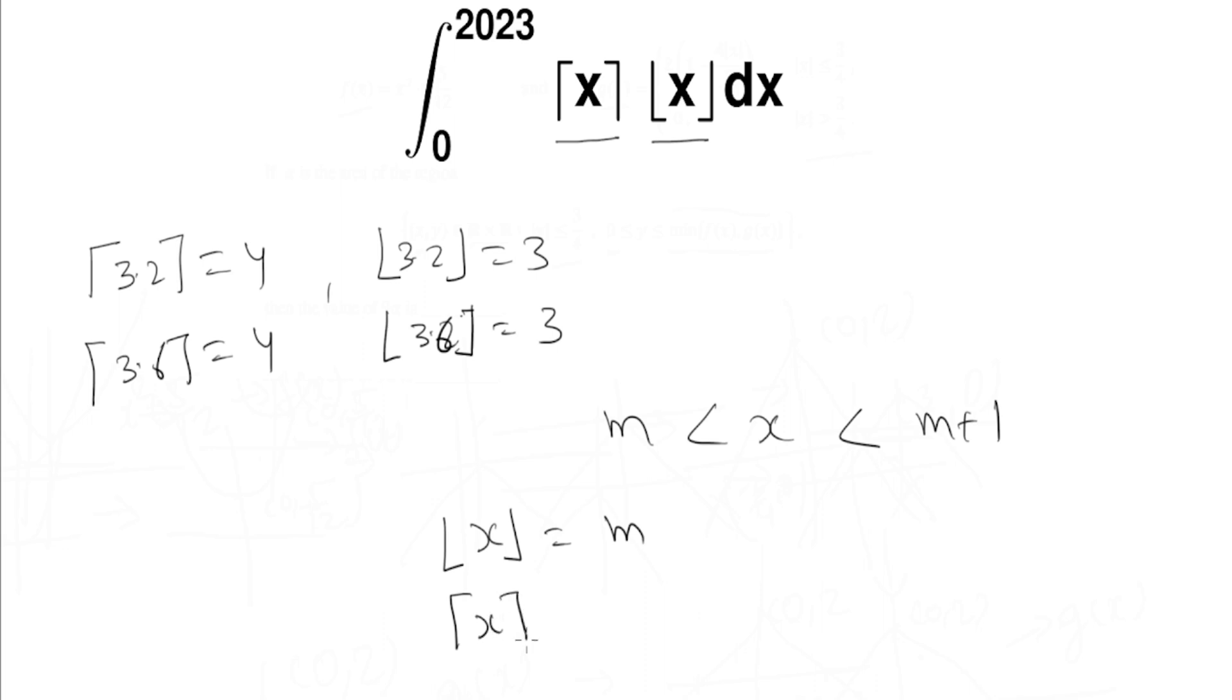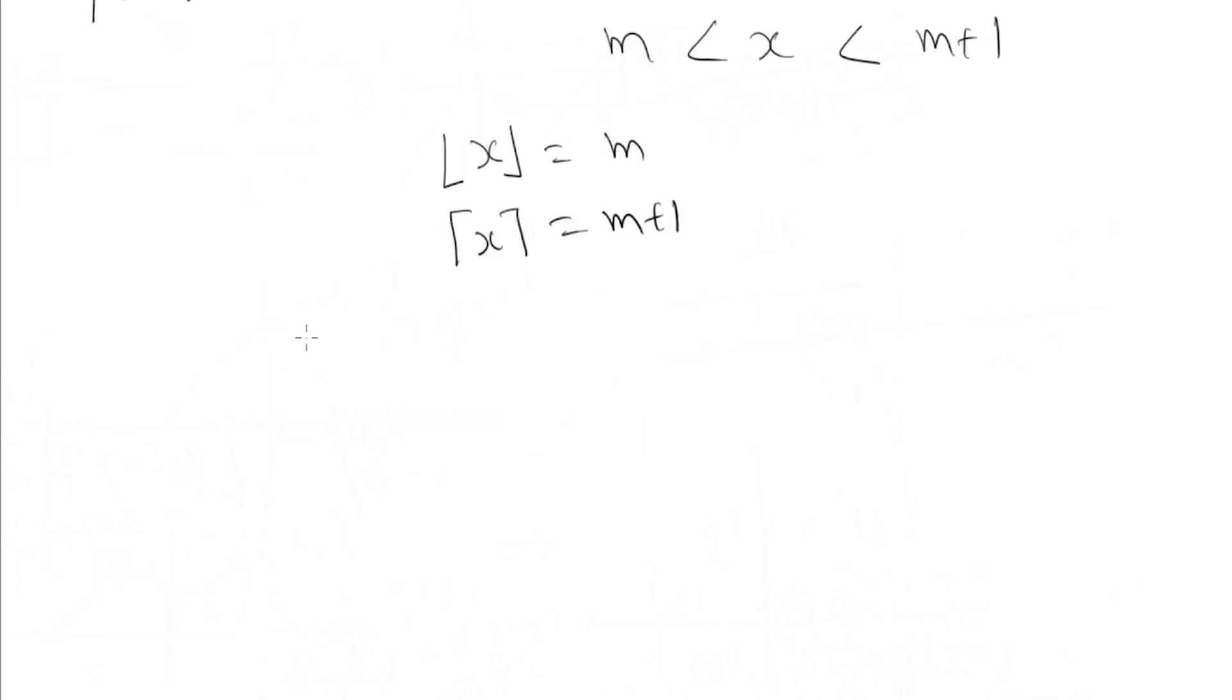So we need to break this integral at integers. If x lies between m to m+1, we can write it as integration from m to m+1 of m times (m+1) dx, and if we sum it from m=0 to 2022, we get the original sum.